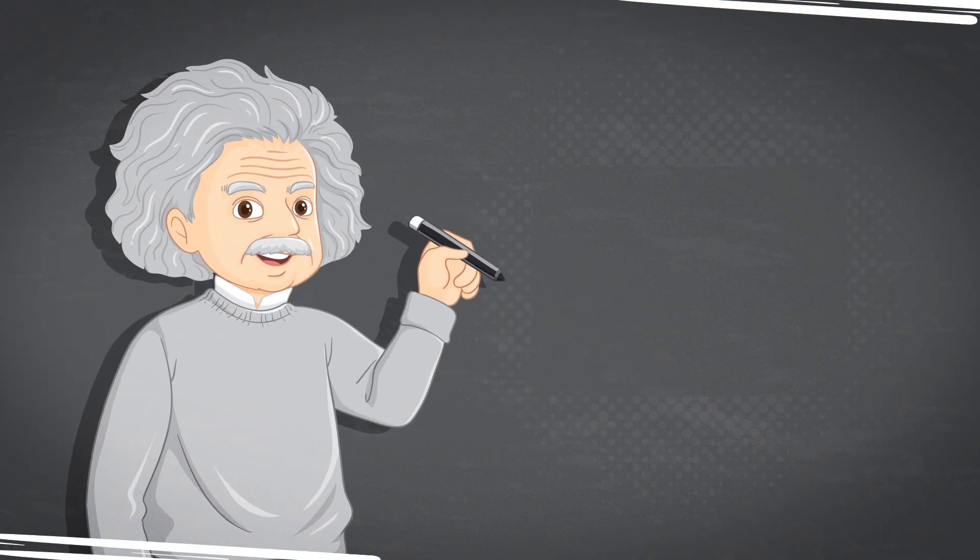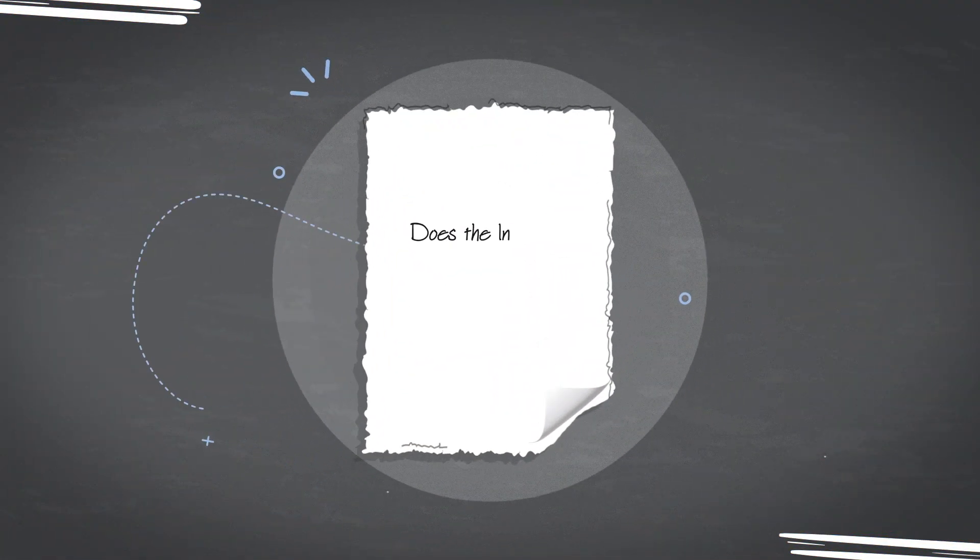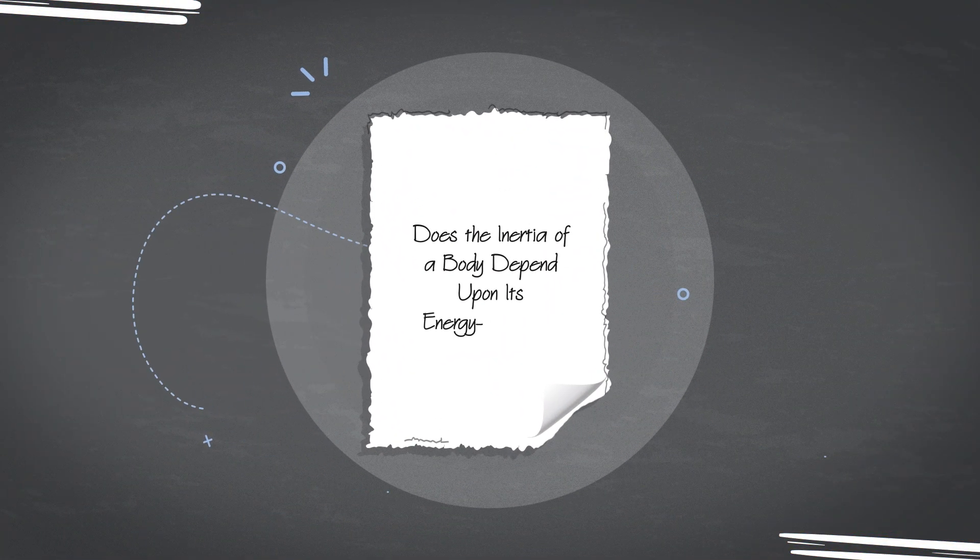Einstein explained the meaning of his most famous formula in his 1905 paper entitled Does the inertia of a body depend upon its energy content?